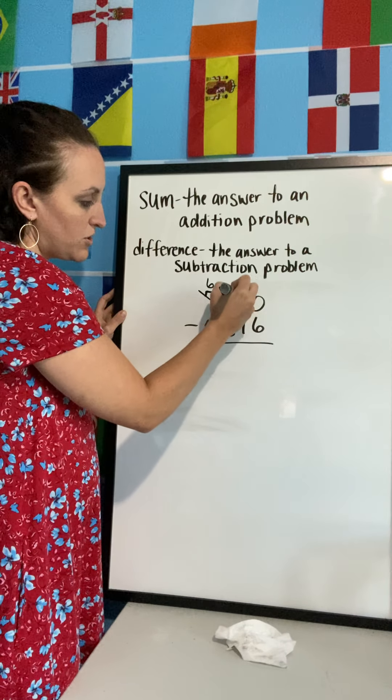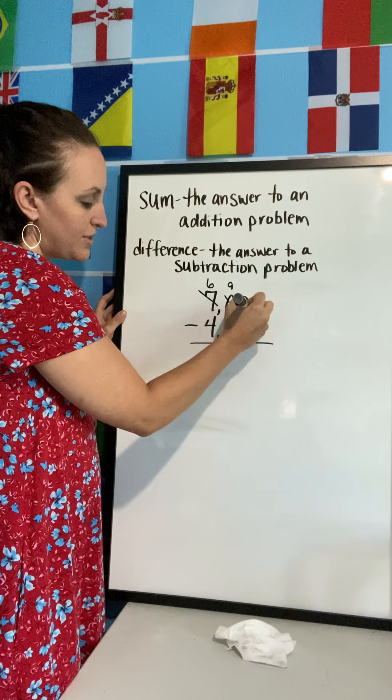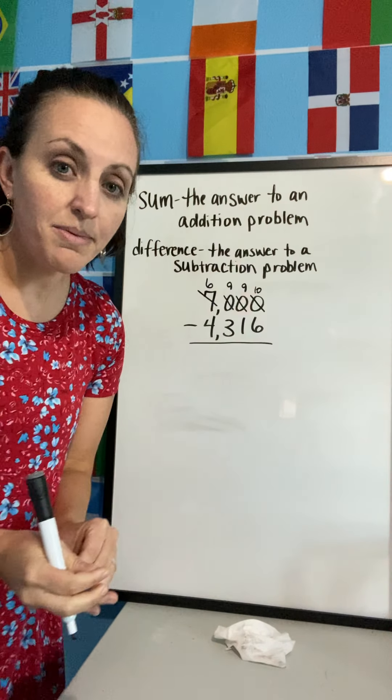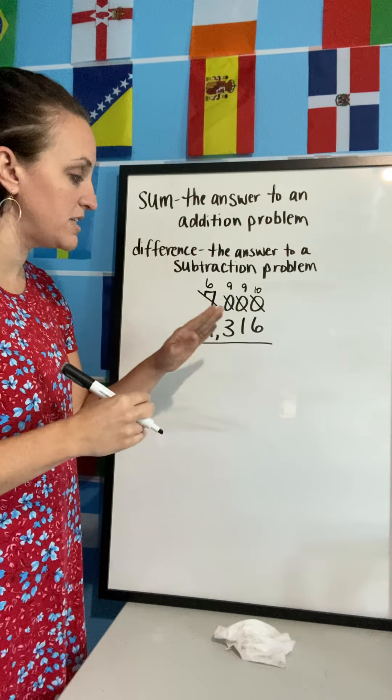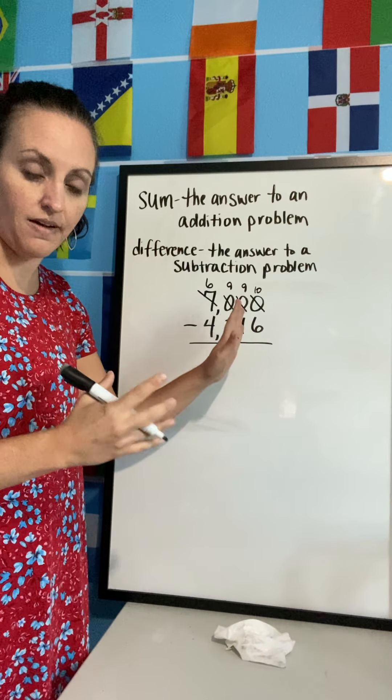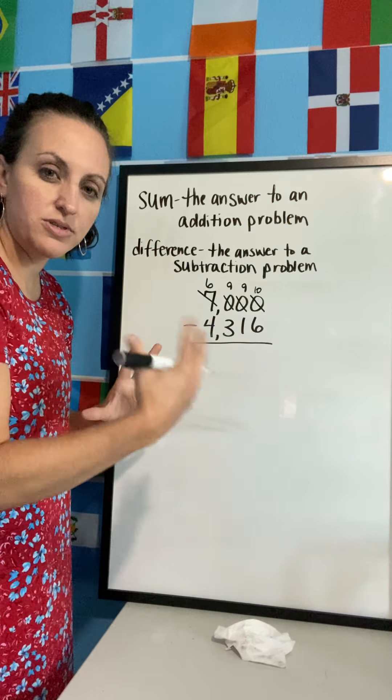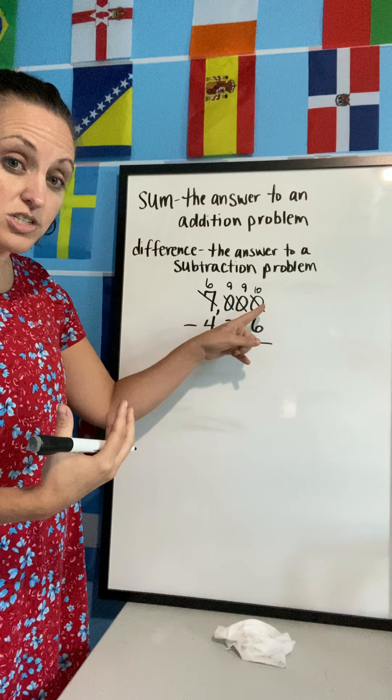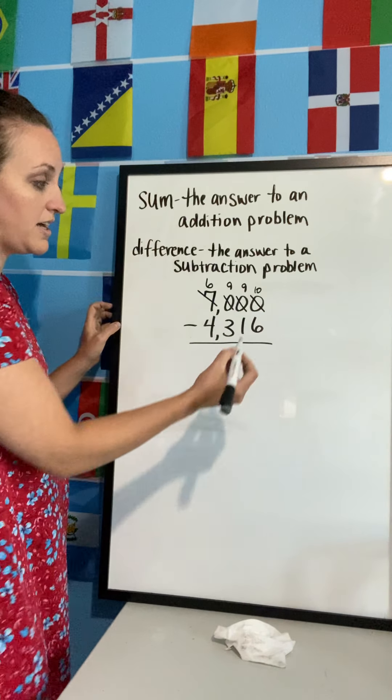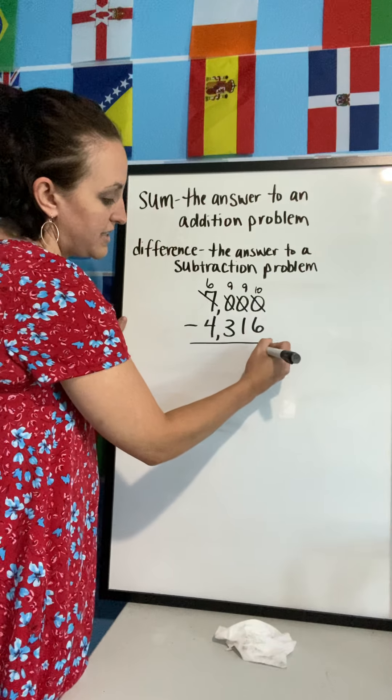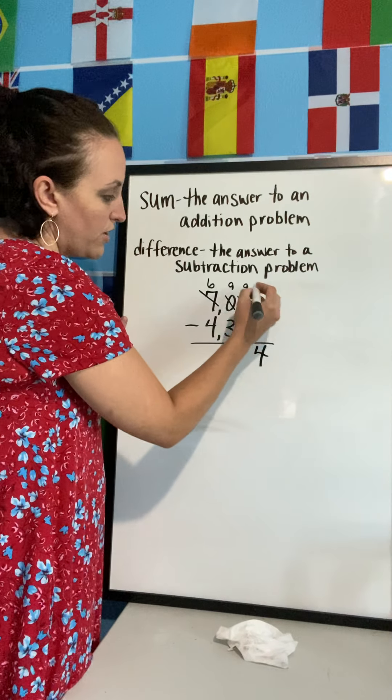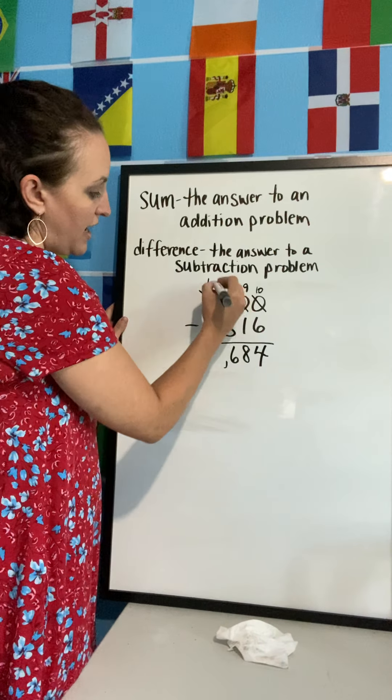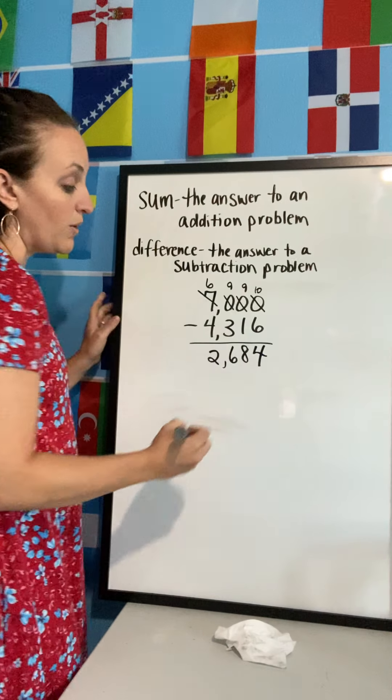This one turns to a nine, this one turns to a nine, and then the zero I start with turns to a ten. So the only time I turn a zero to a ten when I'm regrouping in subtraction is if that's the zero I start with. On the last example, both zeros turned to nines because I didn't start with a zero. In this case, the zero I start with turns to a ten, but the other zeros turn to nines. And then I subtract, so I have ten minus six, and I know that that's four. Nine minus one equals eight. Nine minus three equals six, and six minus four equals two.